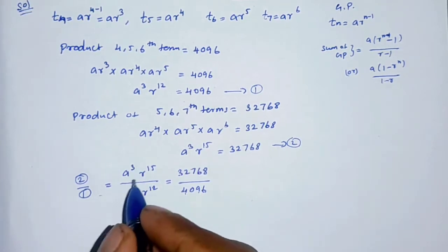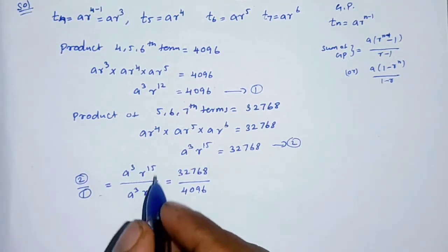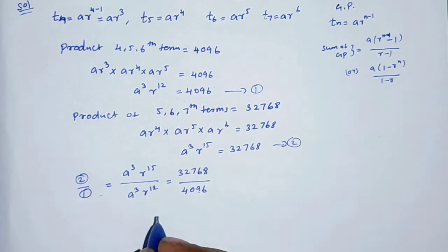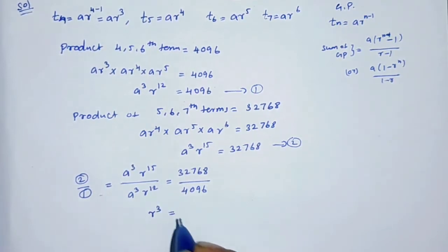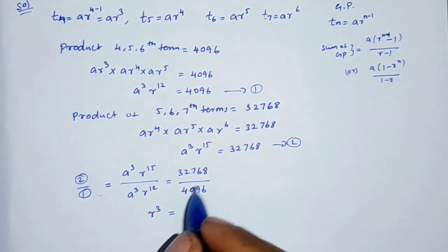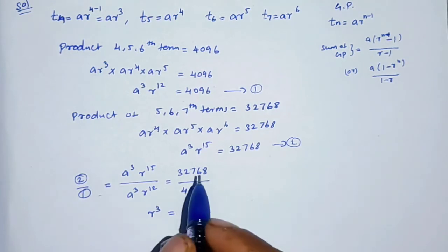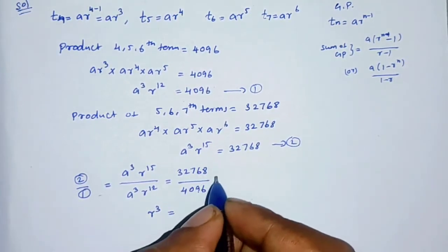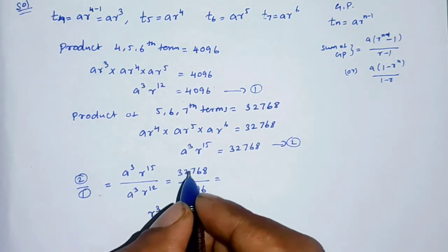The a³ terms cancel, and r¹⁵ divided by r¹² gives r³. So r³ = 32768 / 4096. Dividing 32768 by 4096 gives 8, therefore r³ = 8, and r = 2.